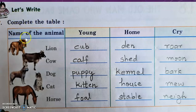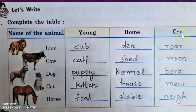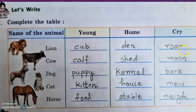Next, children, complete the table. The names of animals are given; we have to write their young one's name, their home, and the sound they make. First: lion — the young one of a lion is called a cub; the lion lives in a den; and the lion roars.